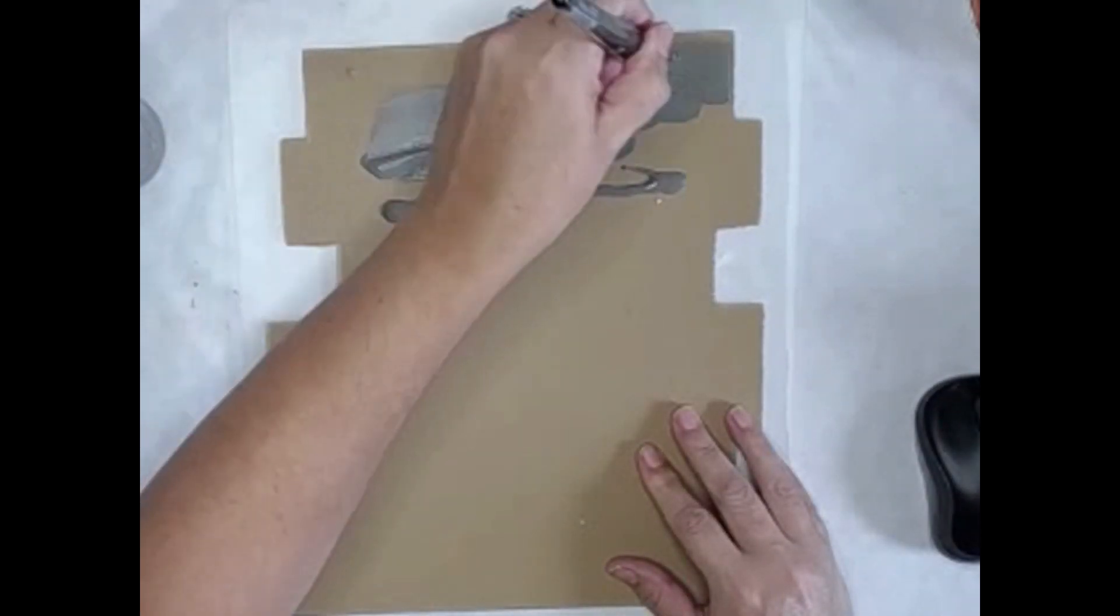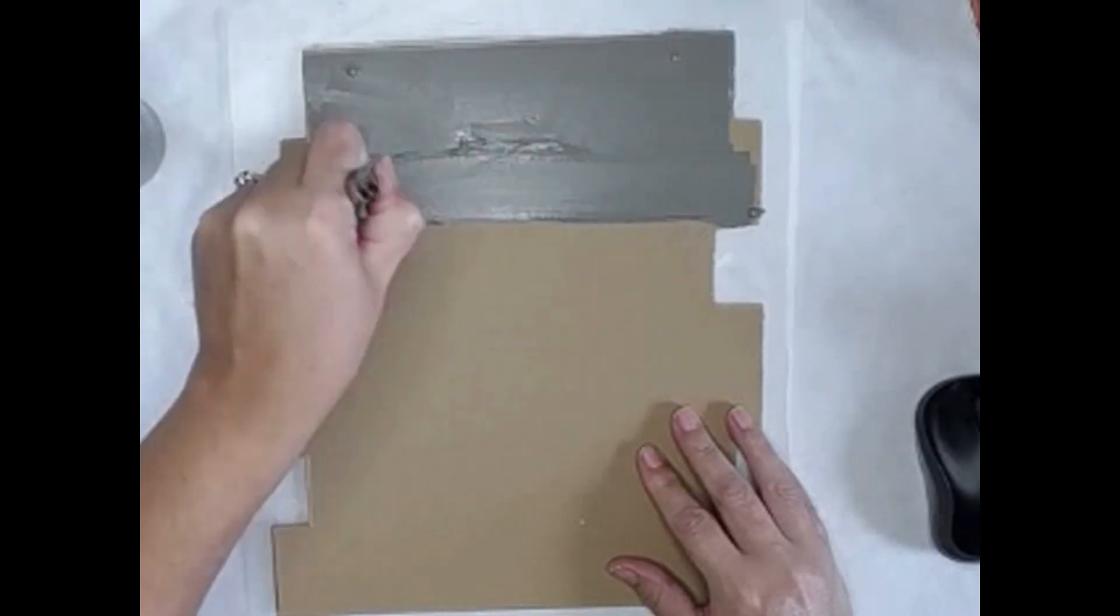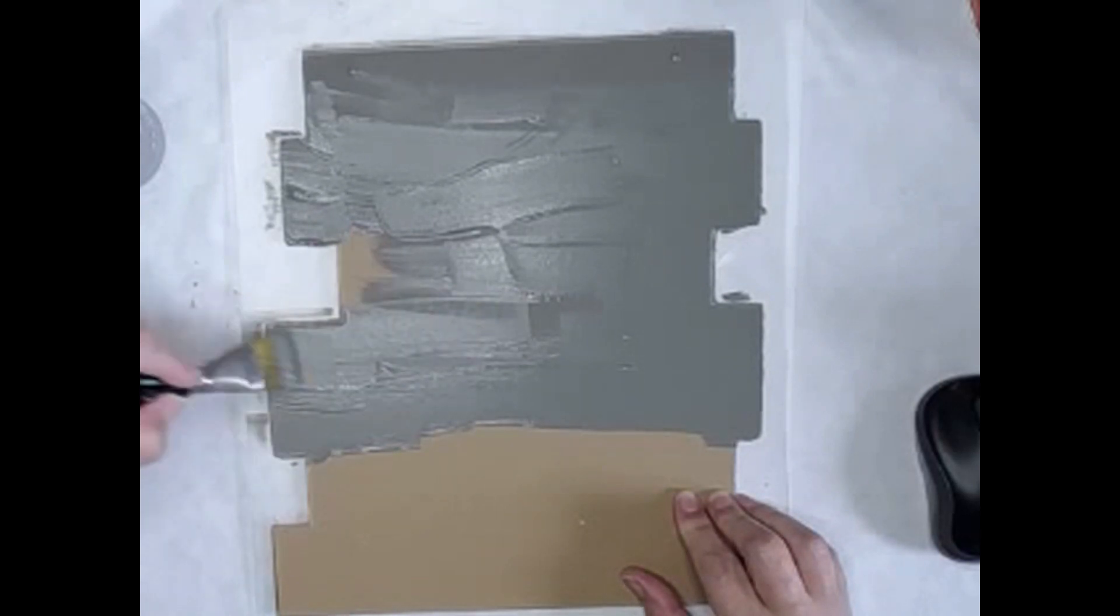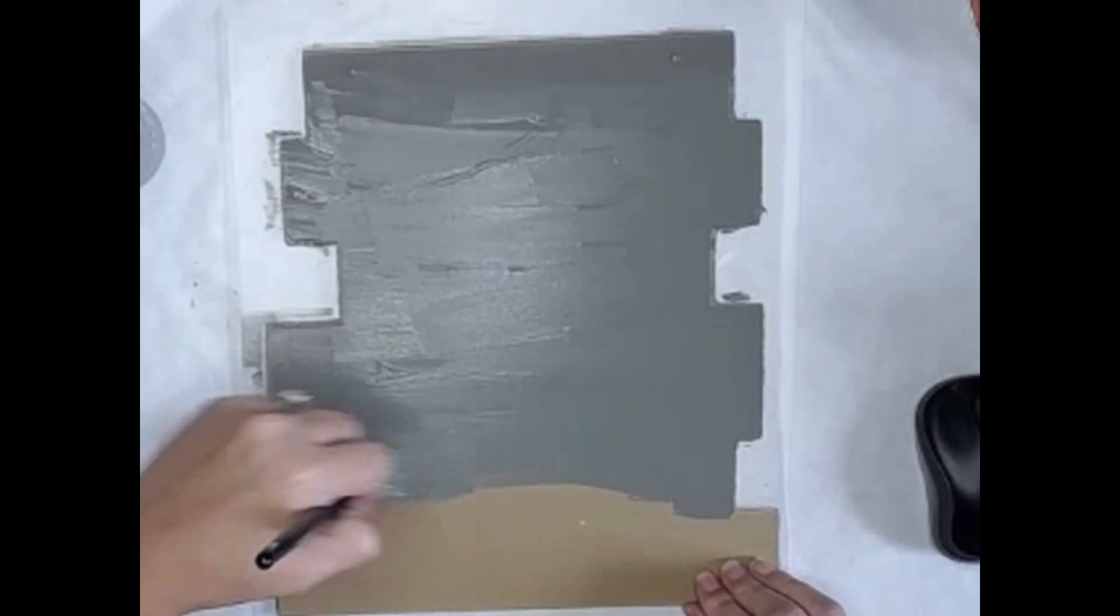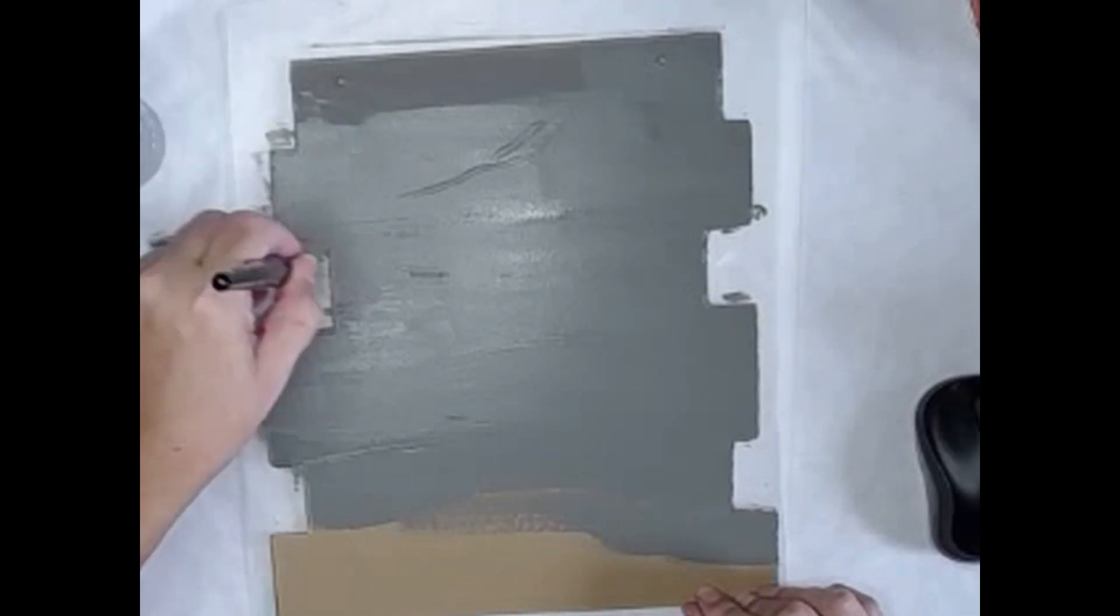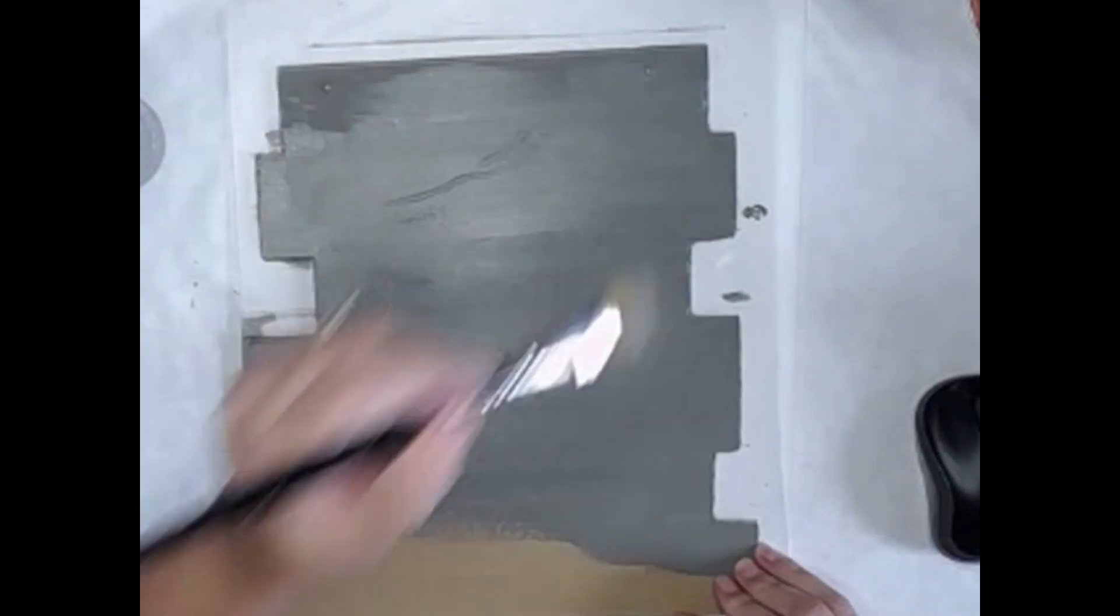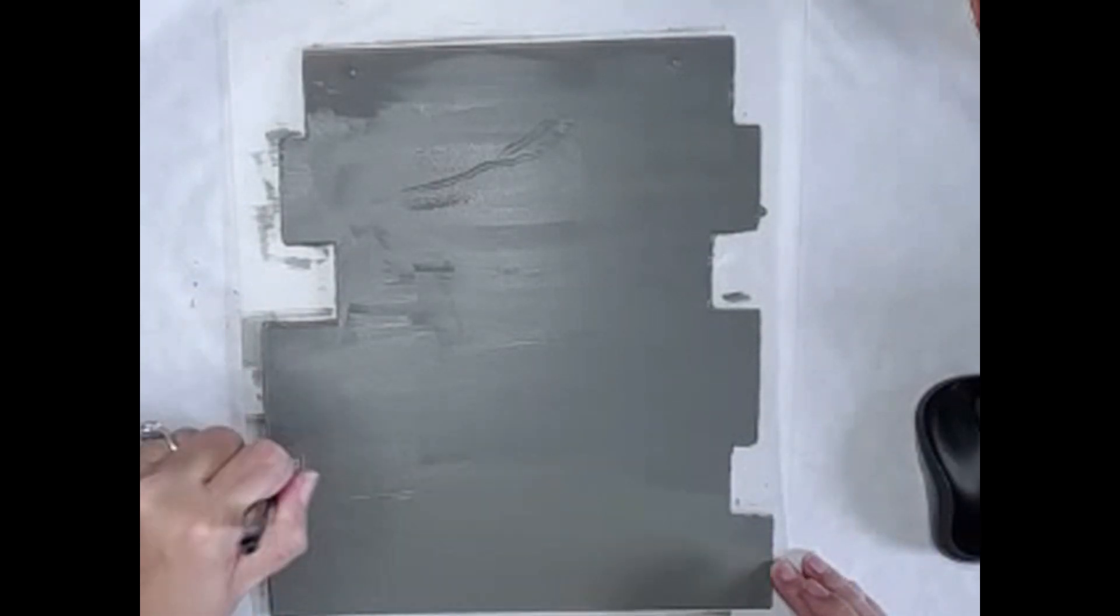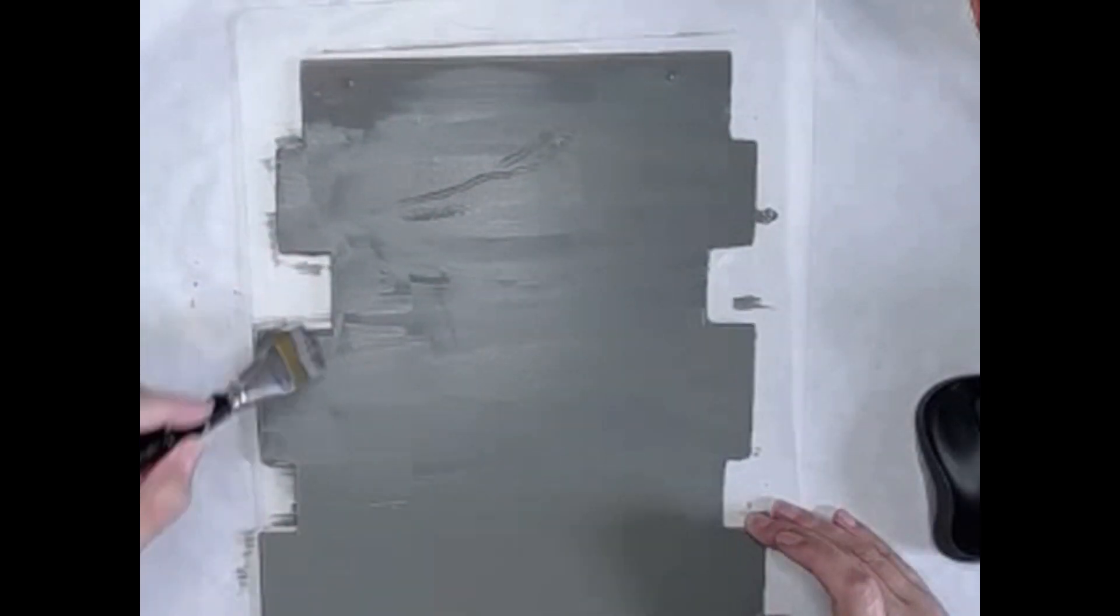I'm using some Apple Barrel Pewter Gray paint, and this will be my base coat, my main color. I'm just going to apply it directly to the sign, and then using a brush, I'm just going to brush it out smooth. I used two coats of this paint on the back of the sign.